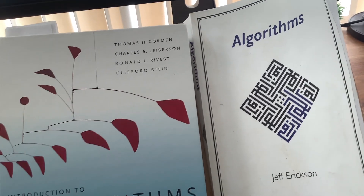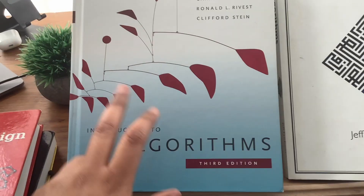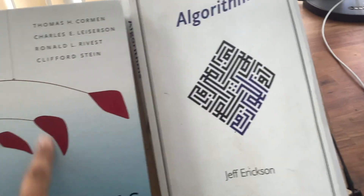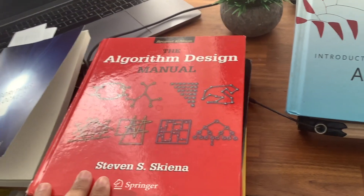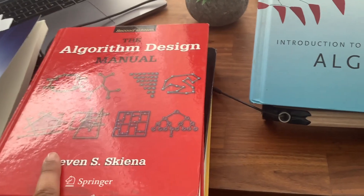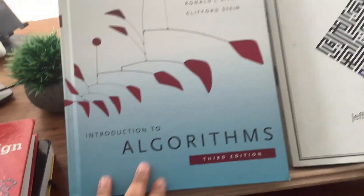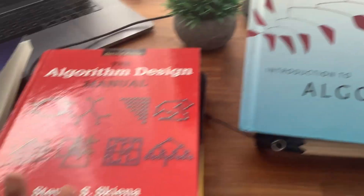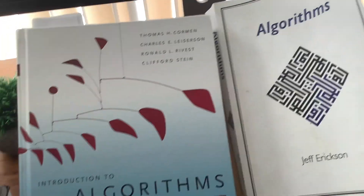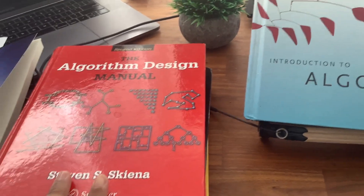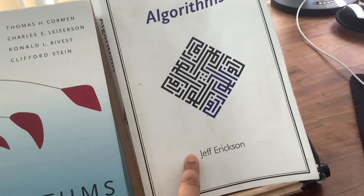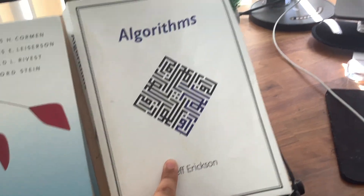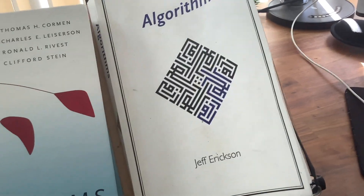Comparing this book to other famous algorithms books: it's definitely easier to read than 'Introduction to Algorithms' by CLRS, which is very math-heavy. If you find this one difficult, grab that one as it would be harder. Compared to 'The Algorithm Design Manual' by Steve Skiena — also widely used and an excellent book — I found 'Algorithms' by Jeff Erickson more accessible overall. You can try both and see which fits you.